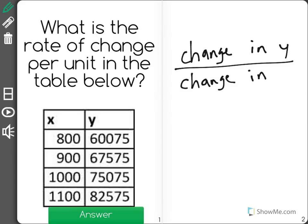It's just like slope, y over x, rise over run. So let's look at our change in y. Our change in y, between 60,075 and 67,575, there is a change of 7,500, a difference of 7,500.